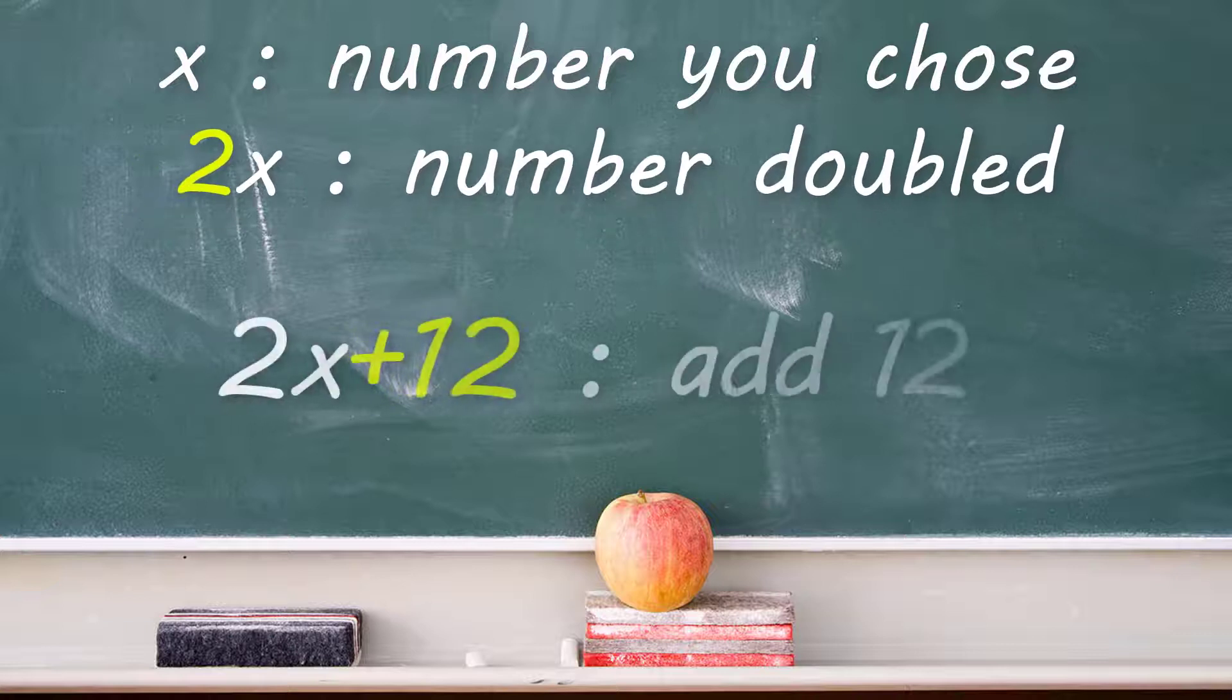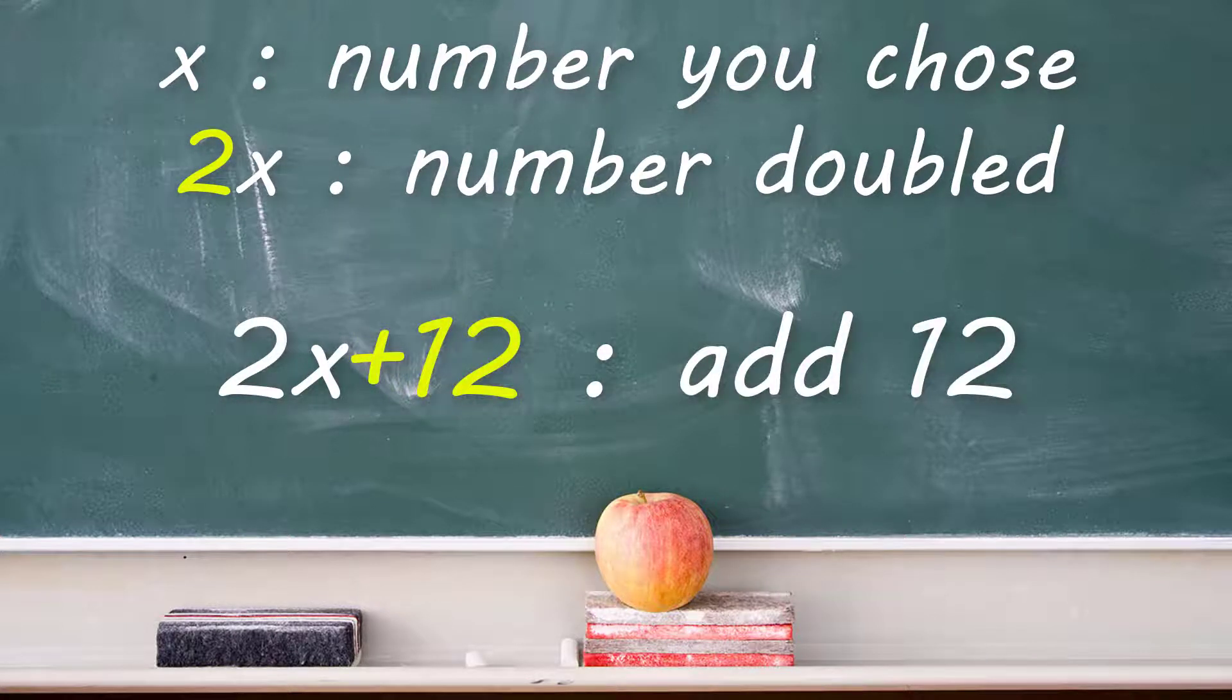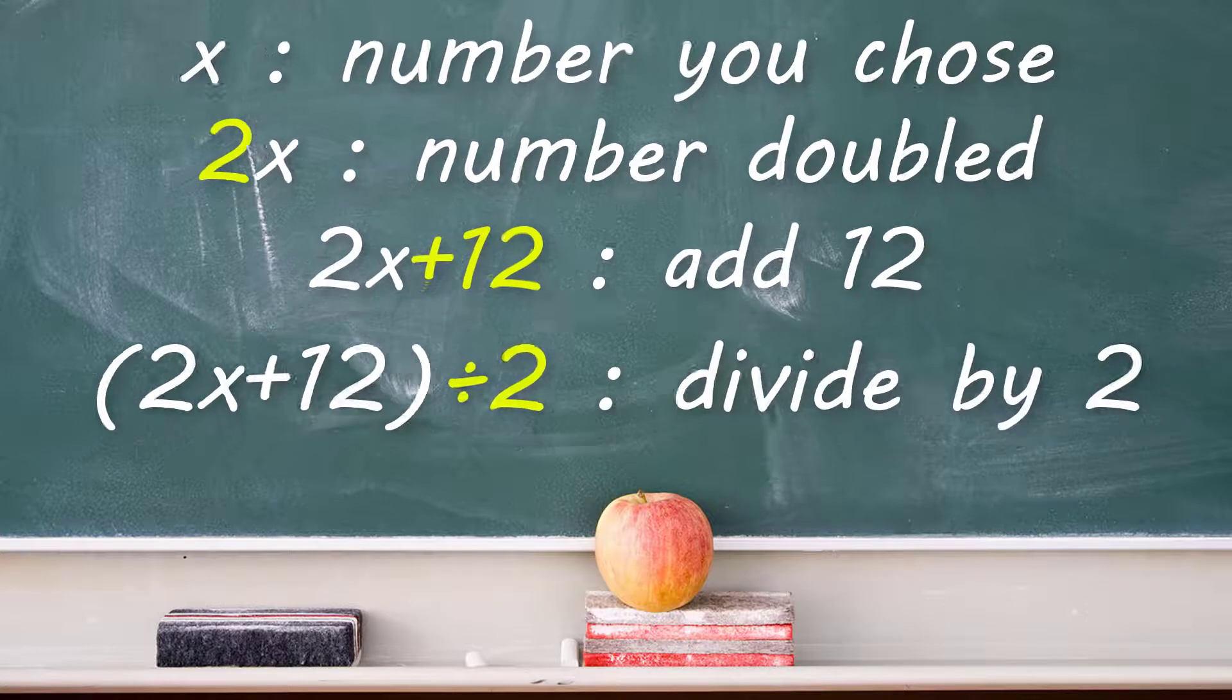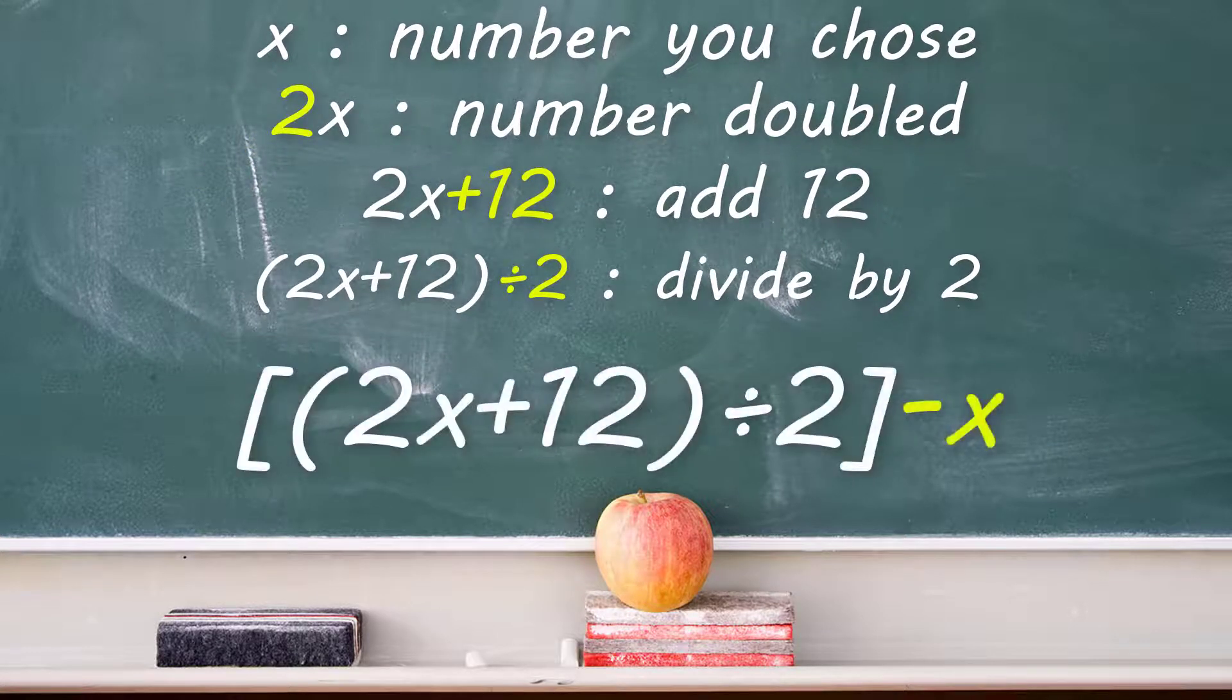When you were told to add 12, here's what that looks like using numbers and symbols. In step 3, you had to divide by 2. The last step was to subtract the original number.